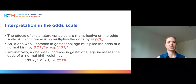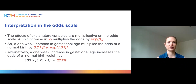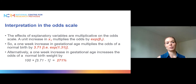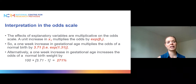Finally, you can interpret results on the odds scale. You take your estimated coefficient — 1.31 for gestational age — and exponentiate it. Exponentiating 1.31 gives 3.71, meaning that with every one-week increase in gestational age, the odds of normal birth weight increase 3.7 times. You can also express this as a percentage: 100 times (3.71 minus 1) equals 271%, so every one-week increase in gestational age increases the odds of normal birth weight by 271%.